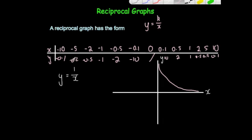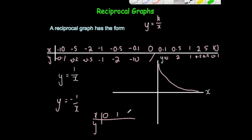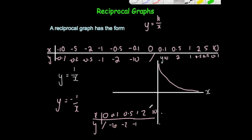So we've drawn a graph in the form y equals k over x where k is a positive number. What would happen if it was y equals minus 1 over x? Well, minus 1 divided by 0 is again undefined, so the y-axis is still an asymptote. Minus 1 divided by 0.1 would be minus 10; minus 1 divided by 0.5 would be minus 2; minus 1 divided by 1 is minus 1; minus 1 divided by 2 is minus 0.5; minus 1 divided by 10 is minus 0.1. Notice it looks the same, but it's in the other quadrant. And doing the negatives — remember, negative divided by negative is a positive — so the graph would look something like this.